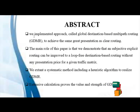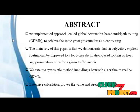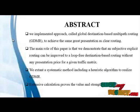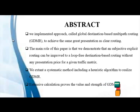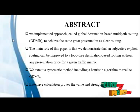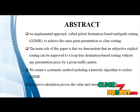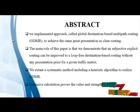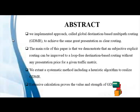This is the abstract. We implemented an approach called Global Destination Based Multi-Routing to achieve clear routing. The main role of this process demonstrates that explicit routing can improve loop-free destination based routing without any overhead for a given traffic matrix. We examine the symmetric method to release GDMR — Global Destination Based Multi-Path Routing — and extensive calculations prove the value and strength of GDMR.